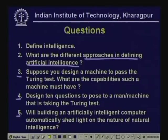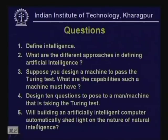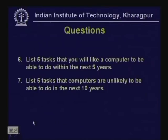Question 5: Will building an AI computer automatically shed light on the nature of AI? Question 6: List 5 tasks that you would like a computer to be able to do within the next 5 years. Question 7: List 5 tasks that computers are unlikely to be able to do in the next 10 years. With this we come to the end of today's lecture. Thank you.